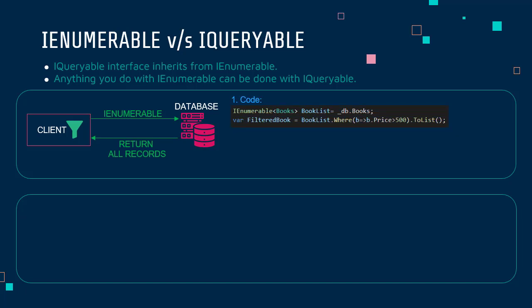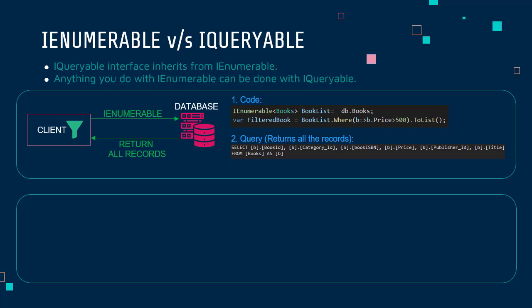Let's say you have code where you are retrieving all the books from your database, and you have an IEnumerable on that book list. When you add a WHERE condition to only retrieve all the books where price is greater than 500, the actual query that gets executed is SELECT all the columns FROM book — there is no WHERE condition passed in the query when Entity Framework goes to the database. Once it retrieves all the books, the filter of price greater than 500 is applied in memory.